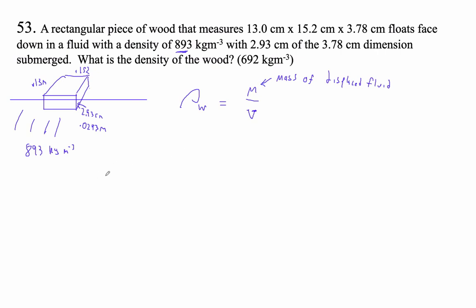So to figure out the mass of the displaced fluid, I'm going to go density times volume of the displaced fluid. The density is 893 kilograms per cubic meter, and then the volume displaced is going to be 0.13 times 0.152 times the amount that it's stuck into the liquid, which is 0.0293.